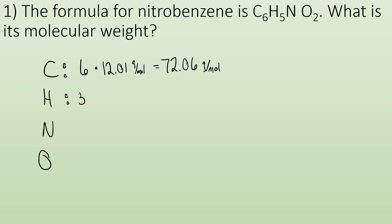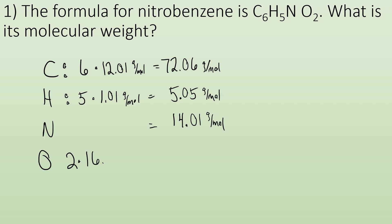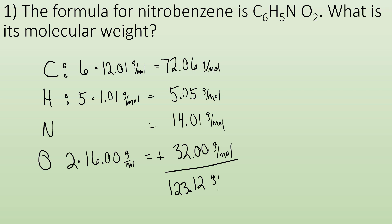Now the same process for hydrogen. There are five hydrogens; the atomic mass is 1.01 grams per mole, which gives me 5.05 grams per mole. Nitrogen, there's only one, so it's 14.01 grams per mole. Oxygen, there are two of them times 16.00 grams per mole, which gives me 32.00 grams per mole. Add all those together and you get 123.12 grams per mole — or you could use atomic mass units, AMU.